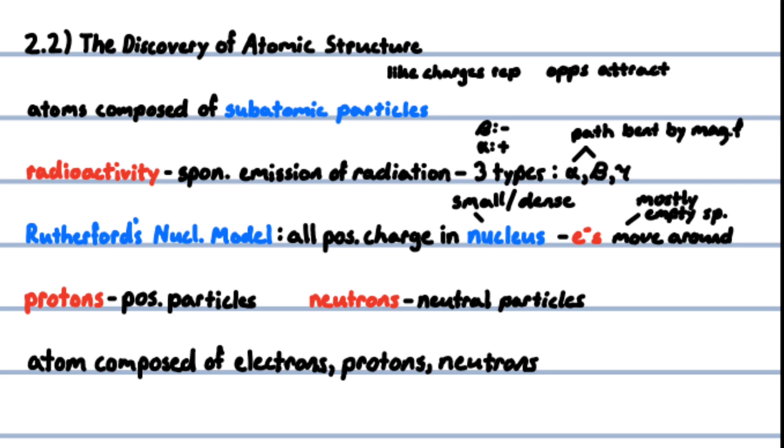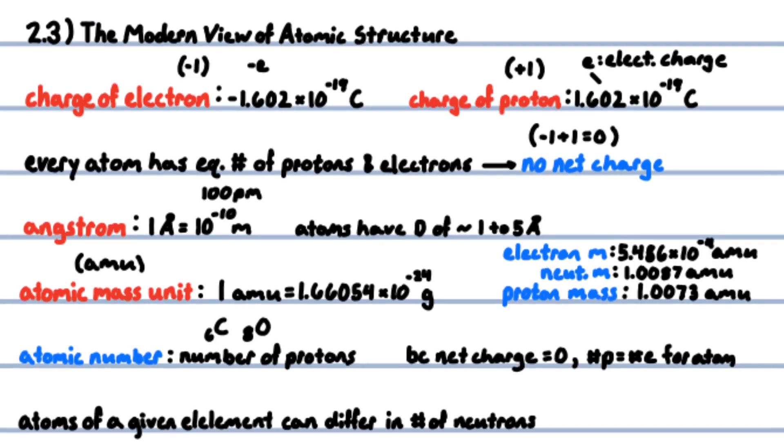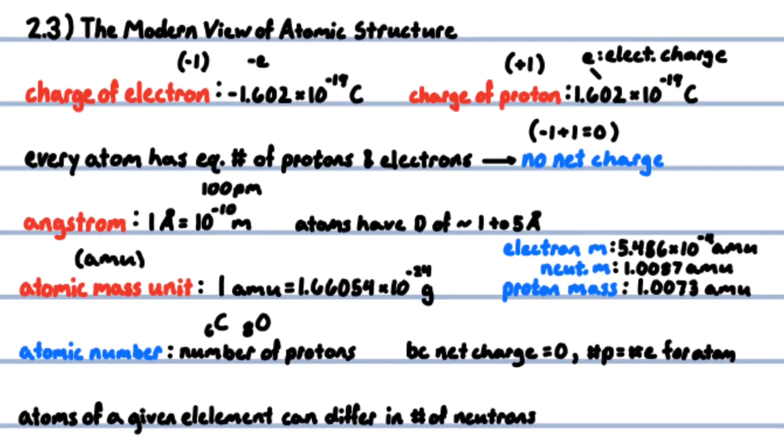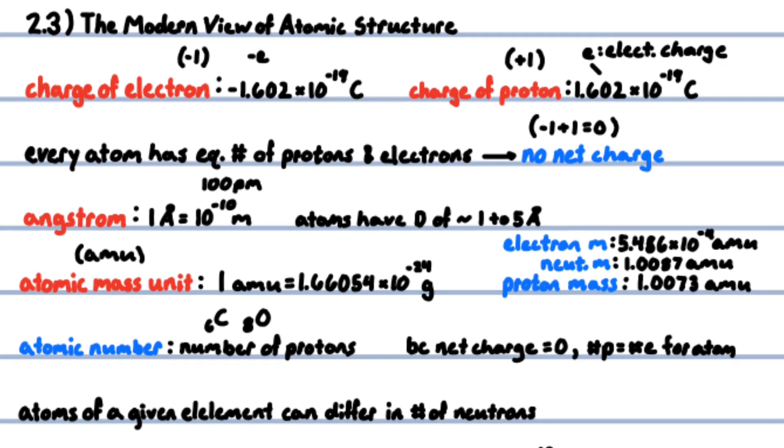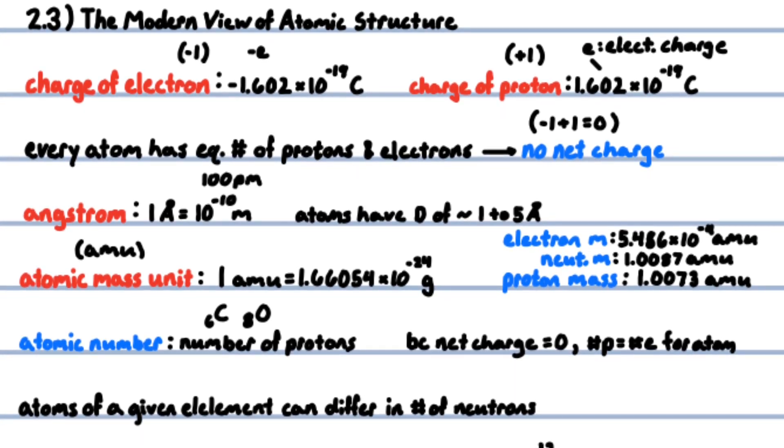Protons are positive particles, neutrons are neutral particles, and electrons are negative particles. The atom is composed of electrons, protons, and neutrons. The modern view of atomic structure describes precise measurements of these particles.